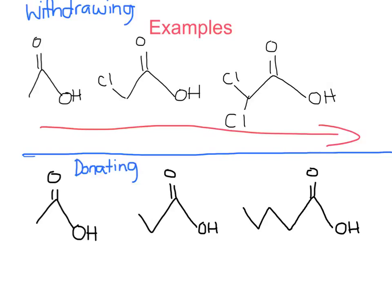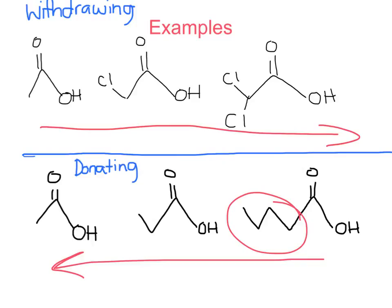Now let's look at the second example, which are going to be donating groups. As you can see here, the first one has no groups on it, this one has one group on it, and then this one has two donating groups on it. Pause the video and see if you can determine which one is the most acidic and which one is the least acidic. As you probably guessed, it's the exact opposite of the first one — it's going to go to the left instead of to the right, because these donating groups are pushing the electron density back to the carboxylic acid. So that makes this more acidic than this one over here.